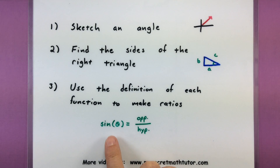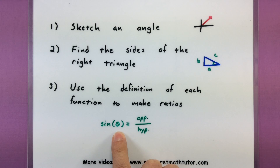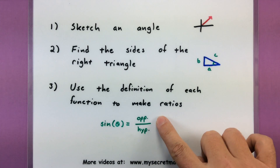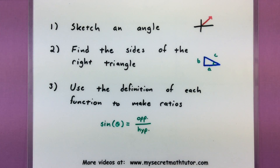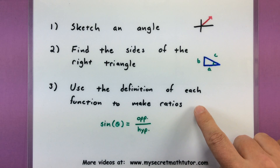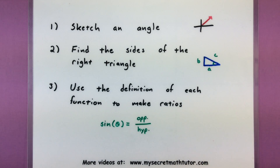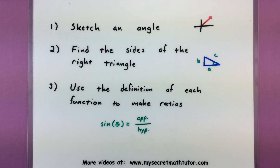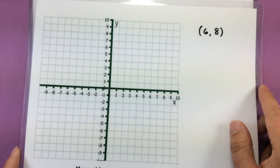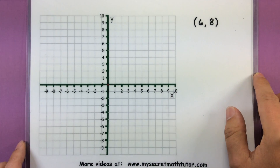As a quick example, something like sine of the angle is simply equal to the opposite side over the hypotenuse. If you're not familiar with the definitions, definitely check out my other video where I go over those. That way you are well prepared. Now let's go ahead and see an example.